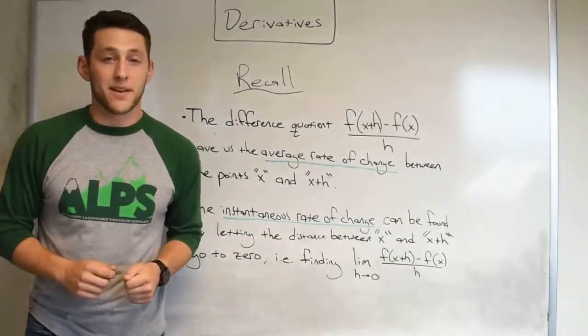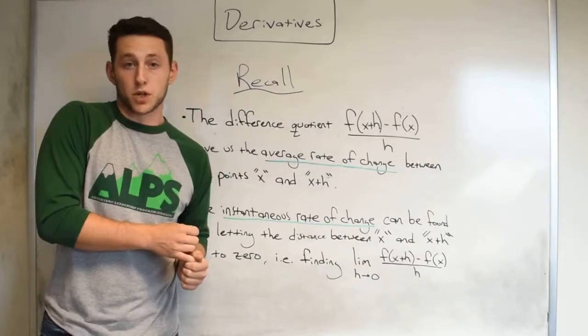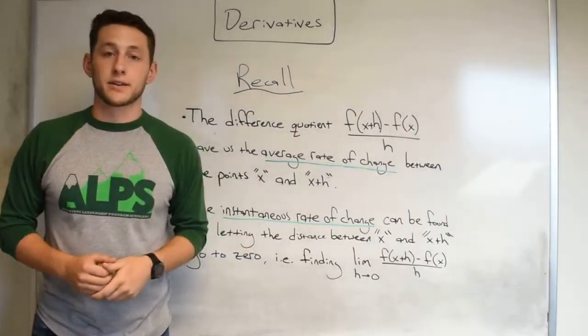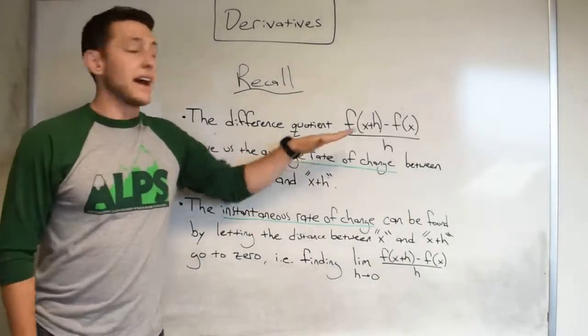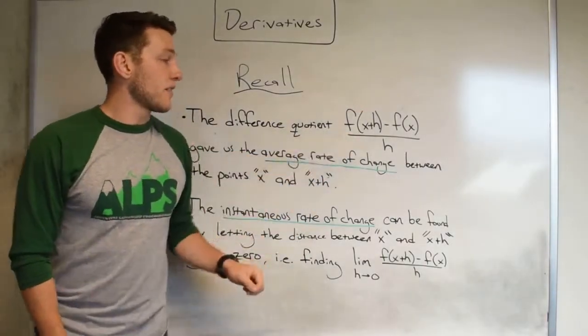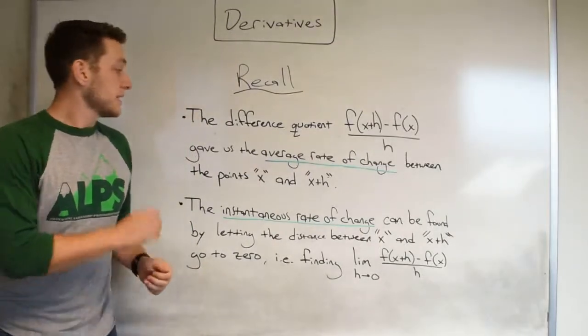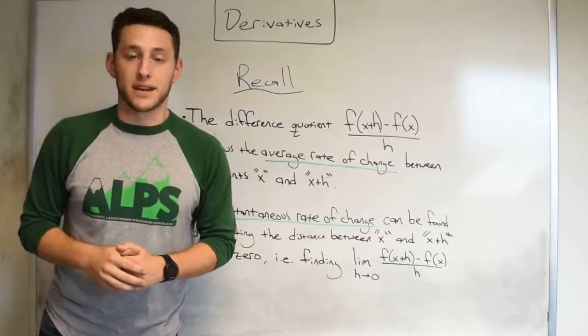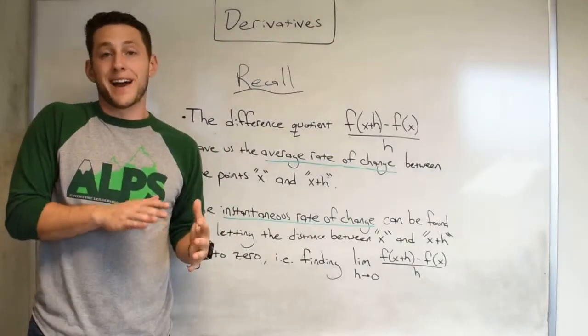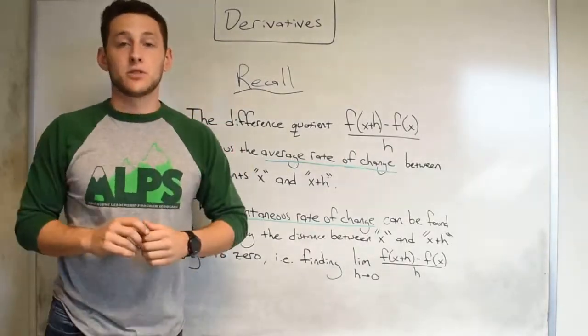Alright now recall from last time that we worked with the difference quotient in light of calling it the average rate of change. As a recall, the difference quotient f of x plus h minus f of x divided by h gives us the average rate of change between two points x and x plus h. Now we thought about that as just the slope of the line connecting the two points.